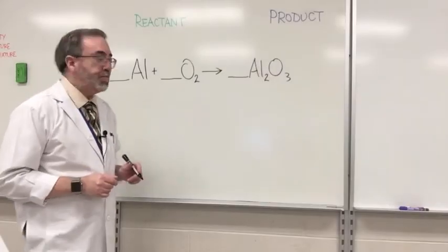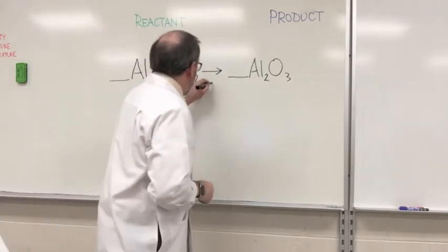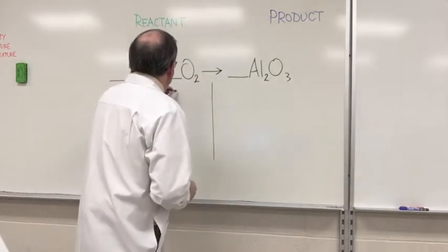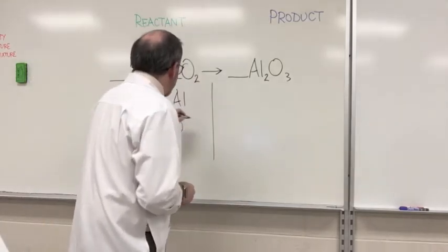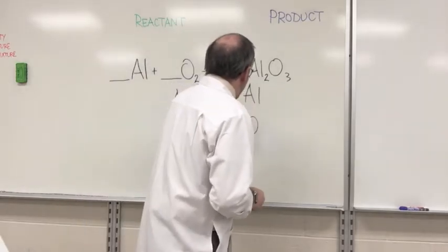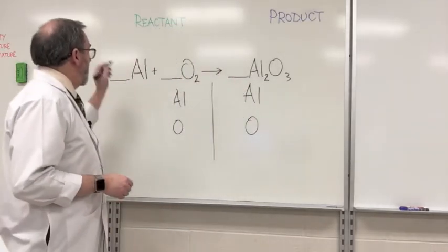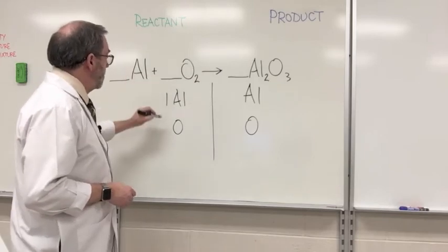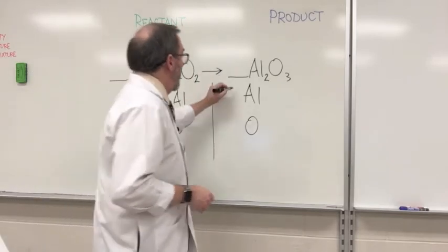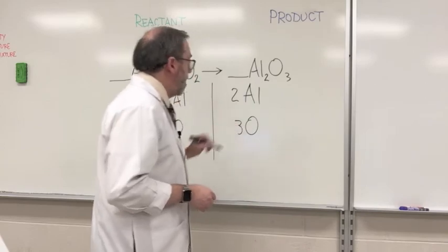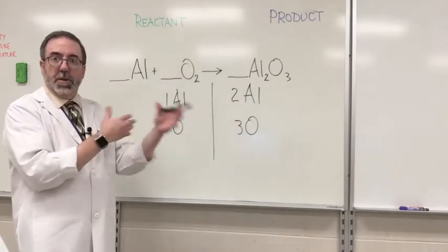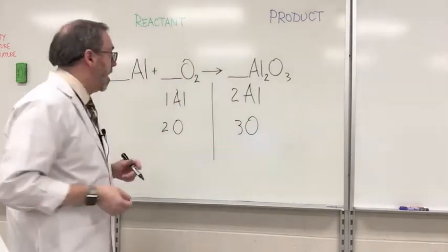Here's the last one. We're going to start off by doing our inventory here. So we're going to have aluminum, oxygen, aluminum, oxygen. So how many do we have over here? We have one aluminum, we have two oxygens, we have two aluminums, and three oxygens. So here's where we get to do that back and forth, back and forth, trying to even everything up.